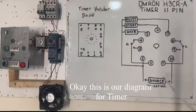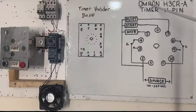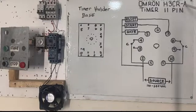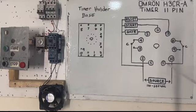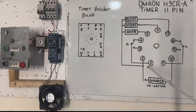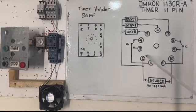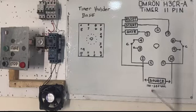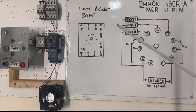This is our diagram for timer Omron timer model H3CR-A 11 pin, this is 1 to 11 pin. This is all terminal contact. And terminal 2 and 10, this is our source supply, 110 to 240 volts. And this 11 pin we need to use for reset and start.